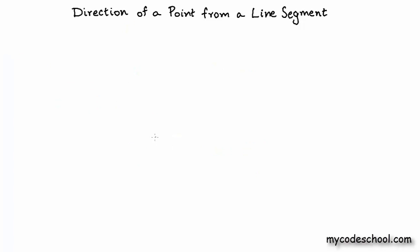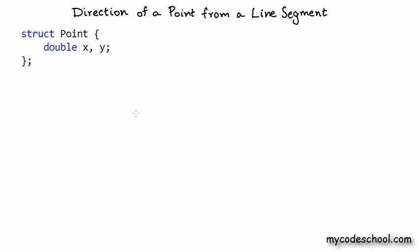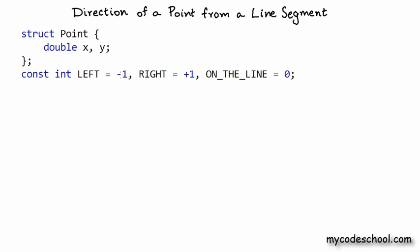Let's look at some C++ code that finds the direction of a point from a line segment. The first thing we need is a way to represent a point. Since C++ is an object-oriented language, a good decision is to use a struct or a class. We declare a struct called point with two member variables x and y representing coordinates, using the double data type since coordinates can be any real number. We also declare three integer constants for left, right, and on-the-line directions.